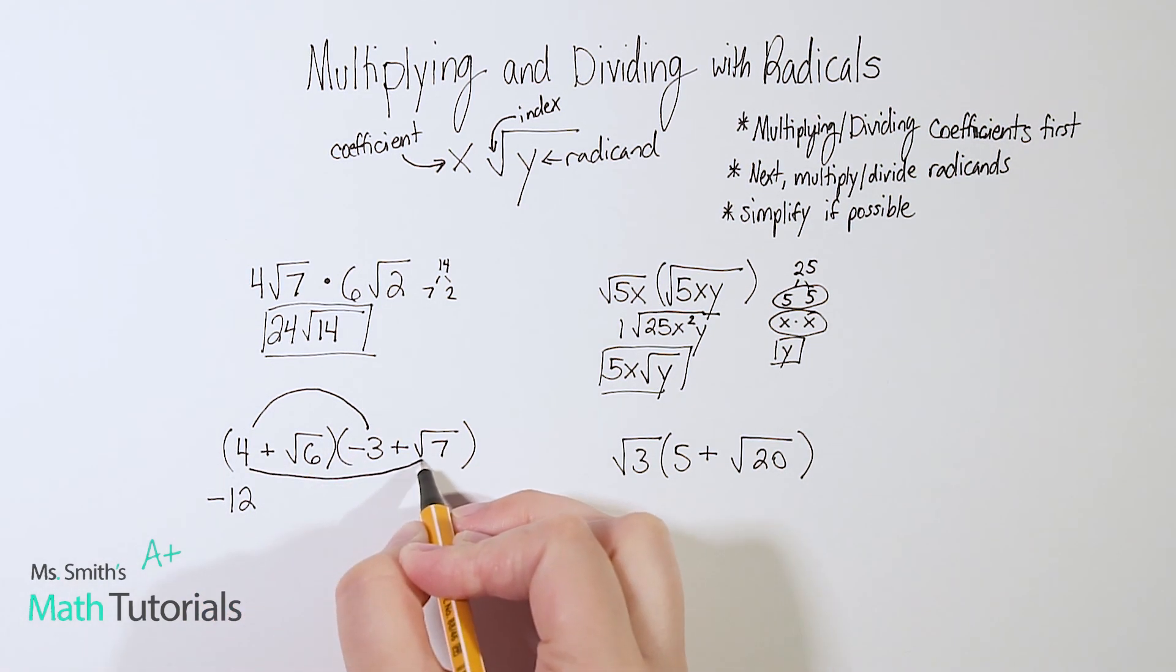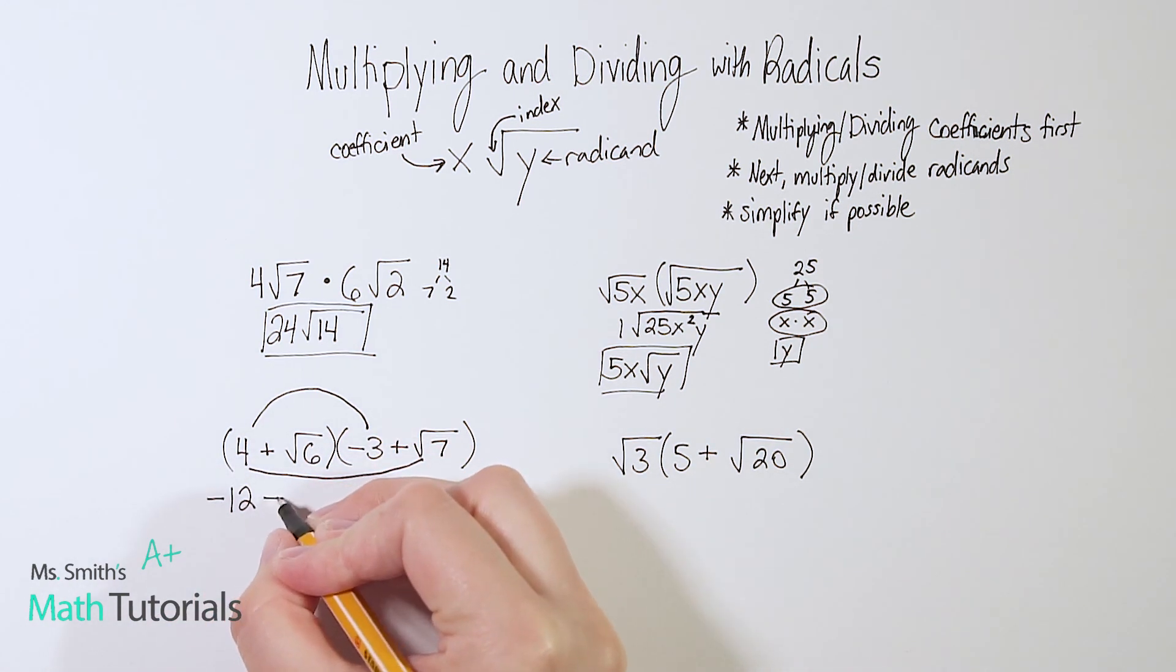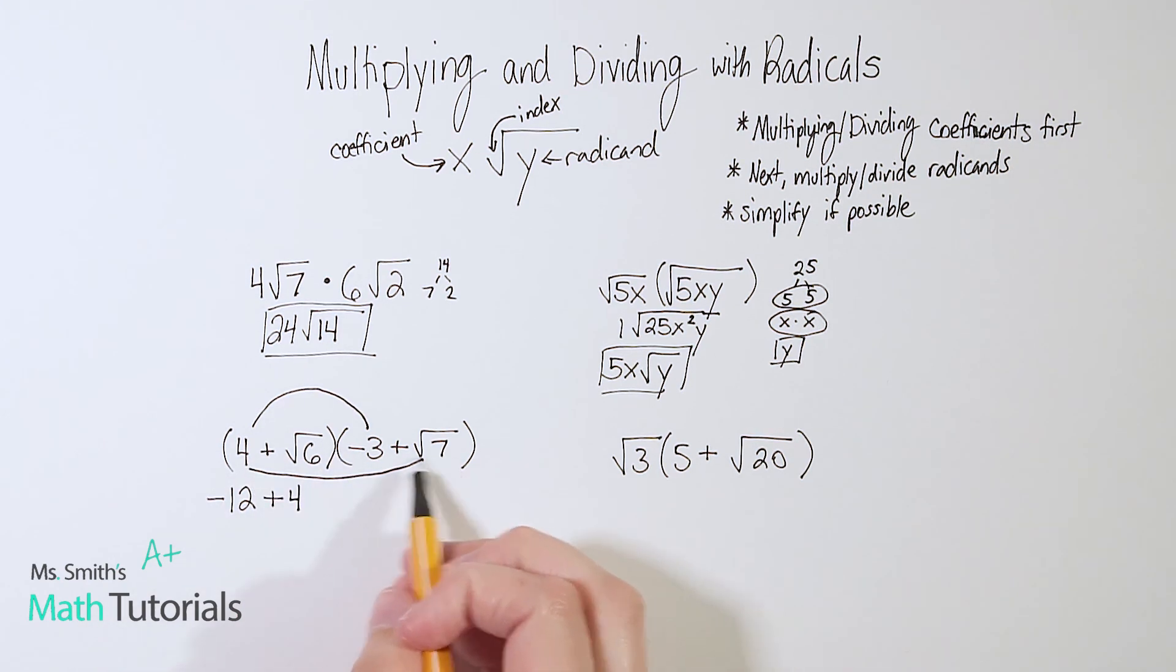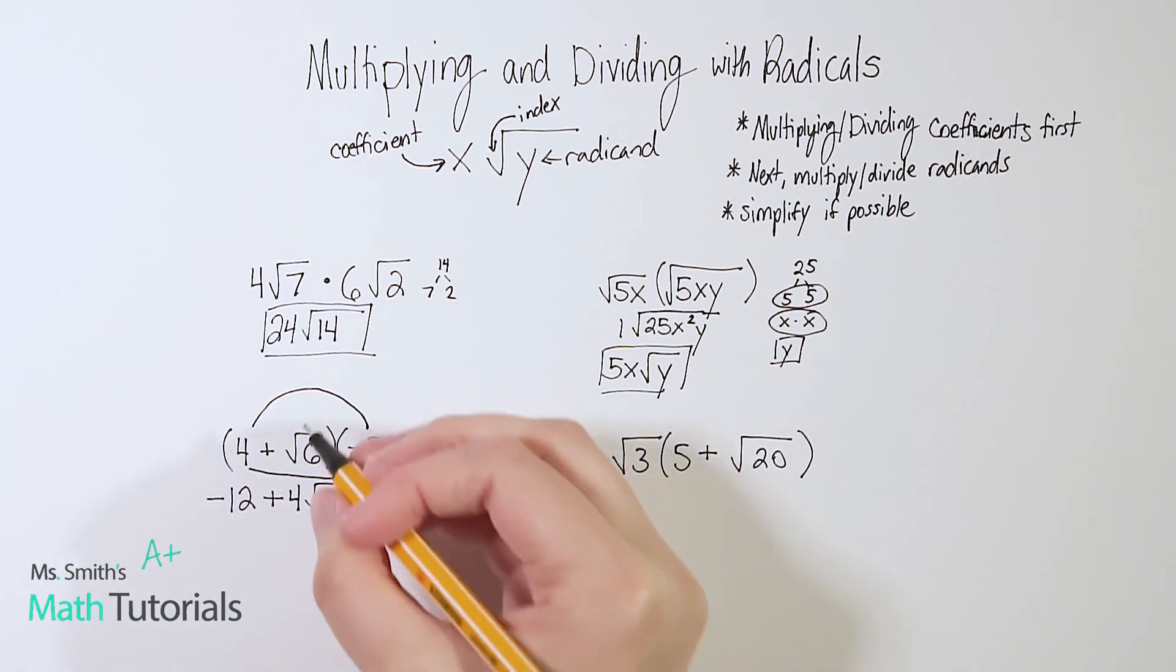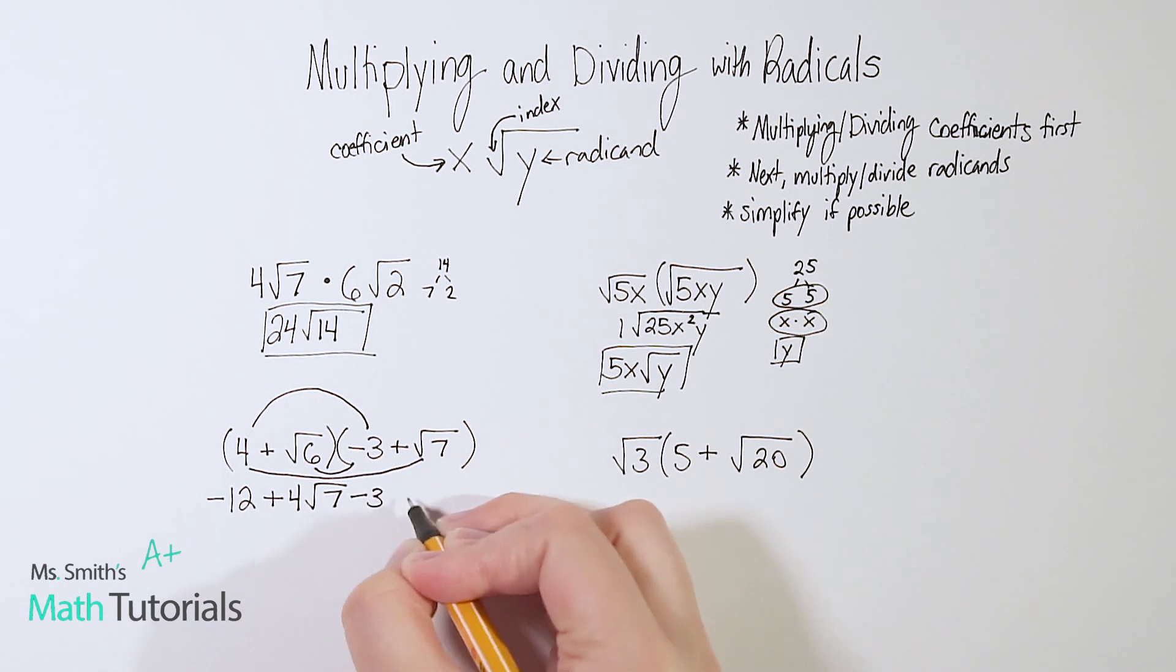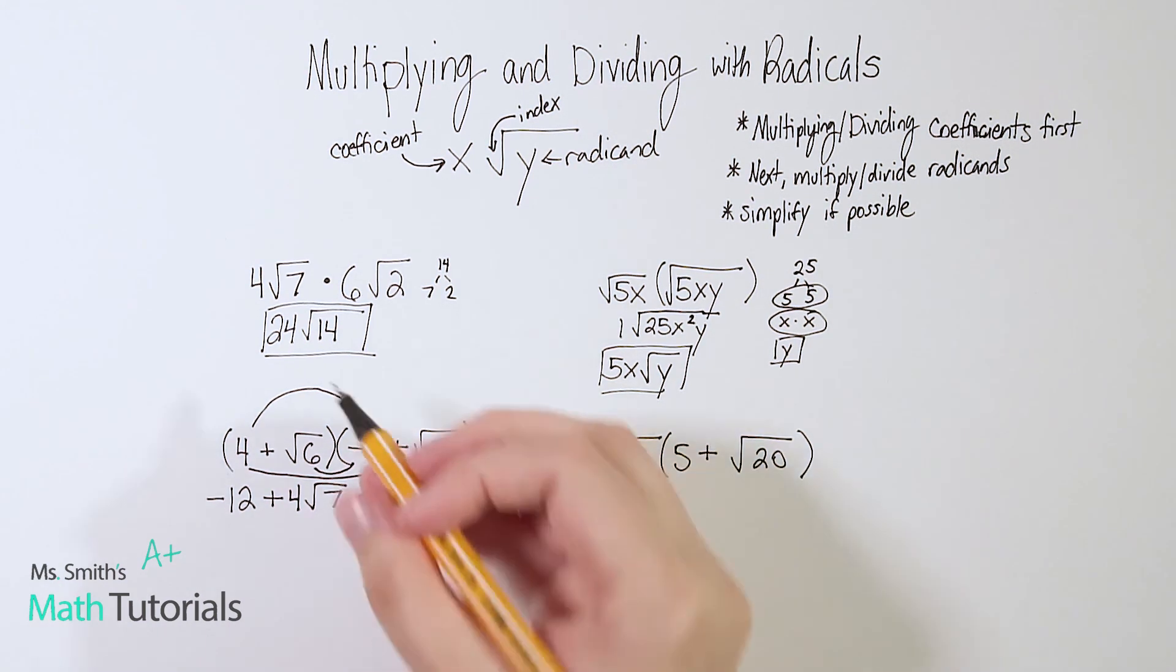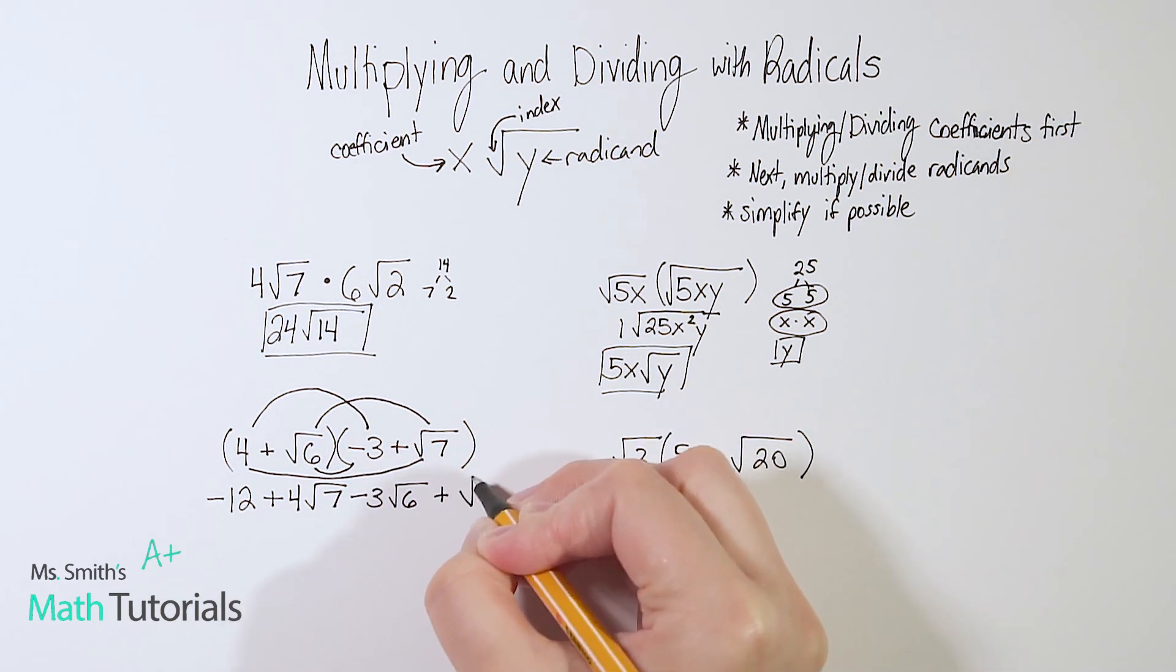Next would be our outer, 4 times the square root of 7. So we need to multiply that by the outside number. So 4 times 1 is just 4. So right now we've got a positive 4 on the outside. I don't have a radicand to combine with over here. So that square root of 7 just comes down. Next we'll do the inner. Square root of 6 times negative 3 is negative 3 times the square root of 6. And next will be my last, square root of 6 times square root of 7. We'd multiply the numbers outside the radicand, which would be 1 times 1, which is just 1. And then we would multiply 6 times 7, which would be square root of 42.